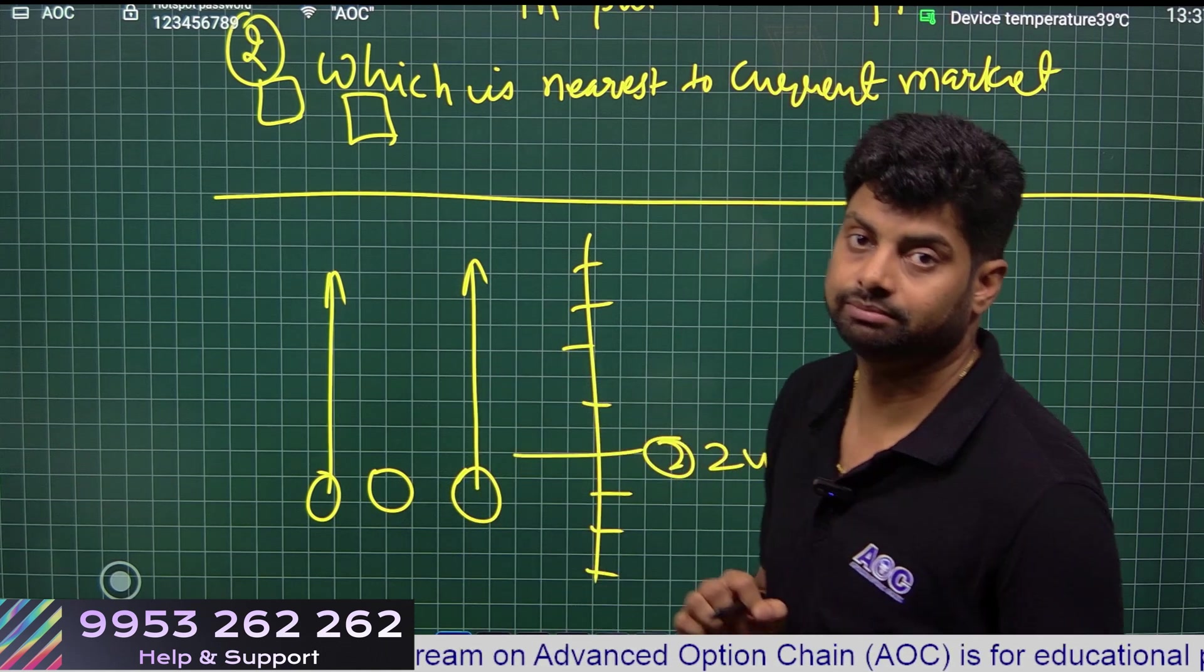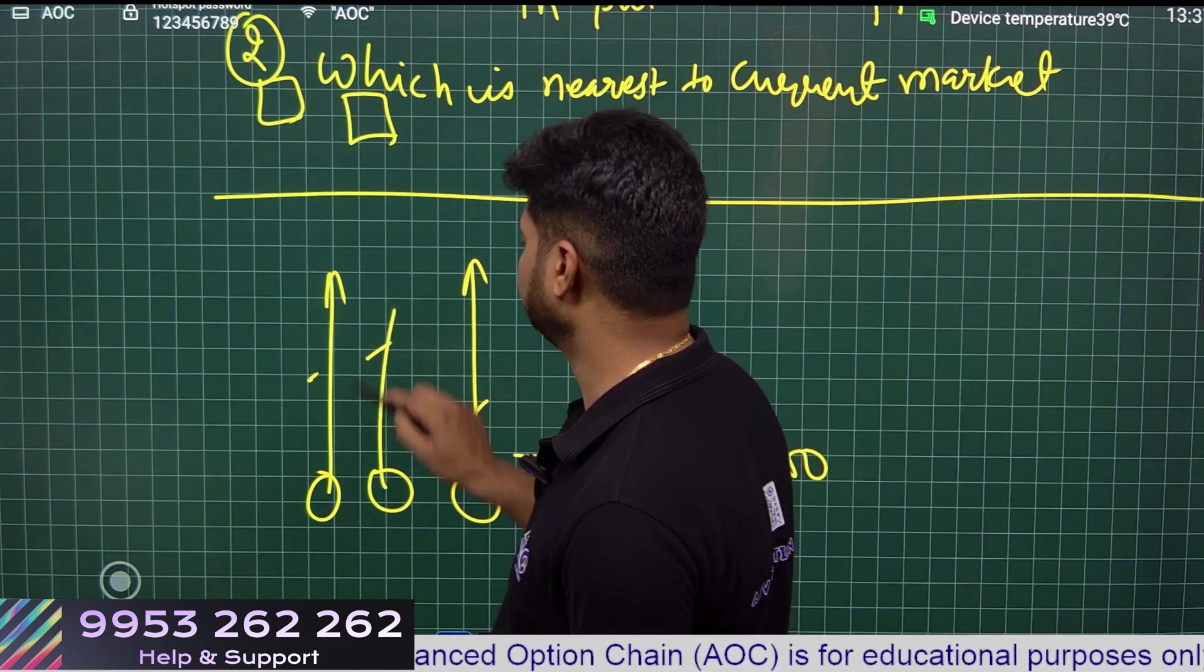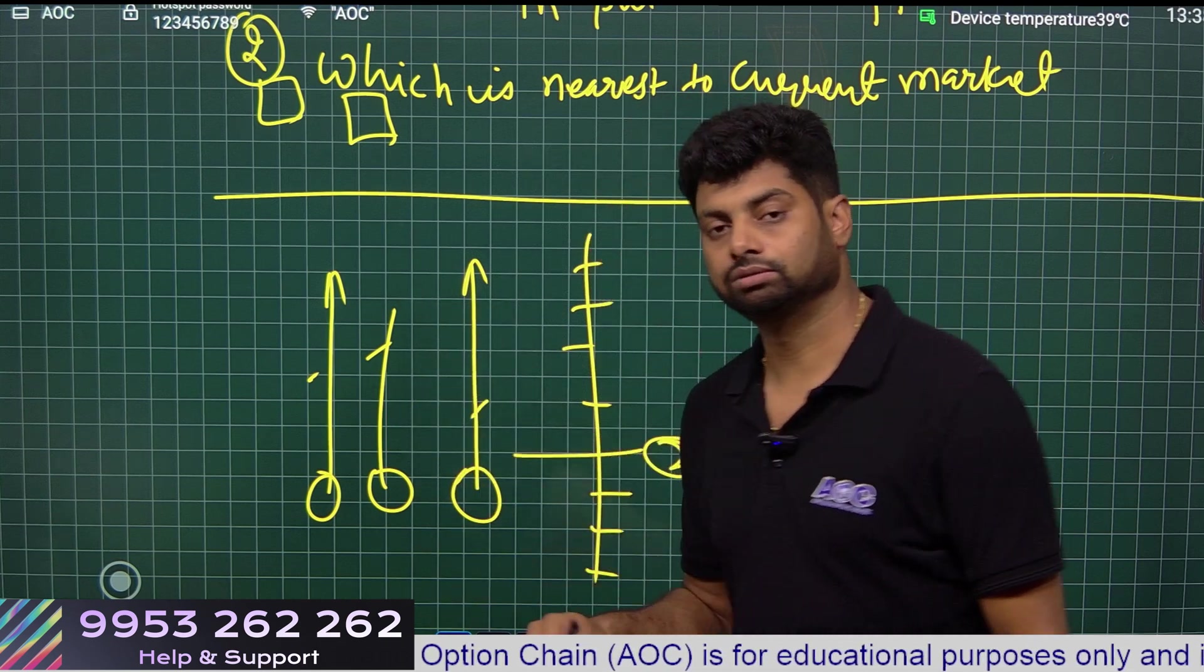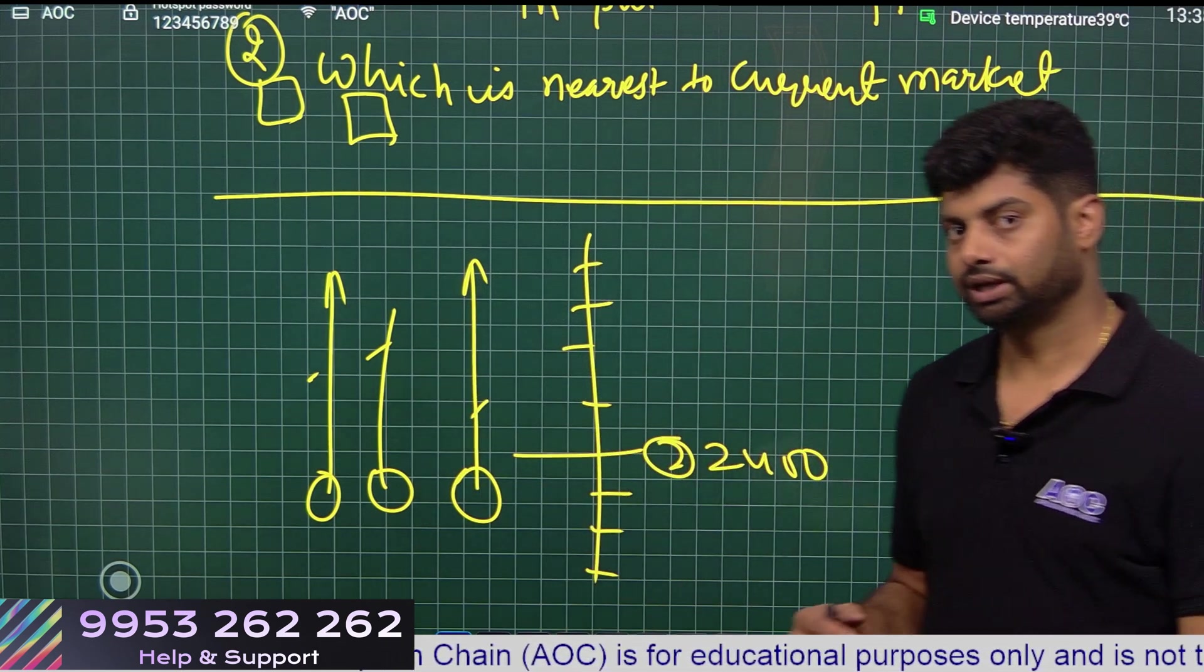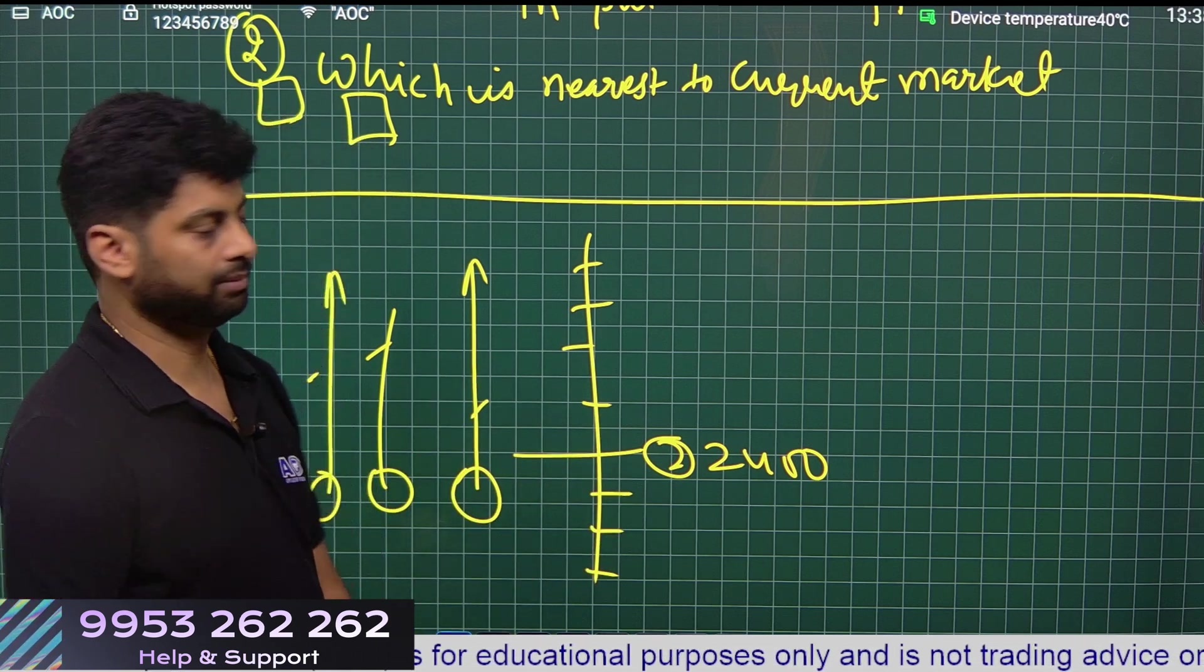We are not comparing OI with OI change, we are comparing strike price volume with volume of that particular same strike price. Suppose this is our maximum volume, this strike price has maximum OI, this strike price has maximum OI change.